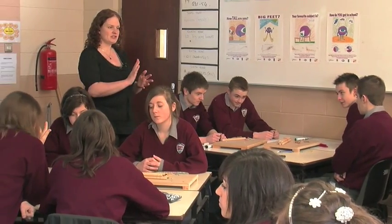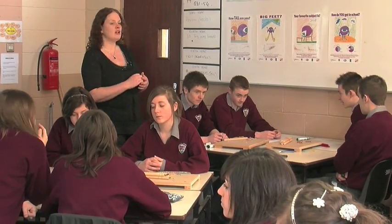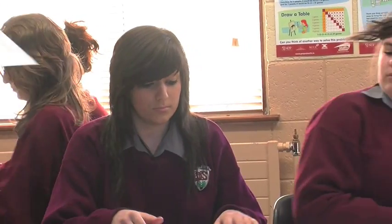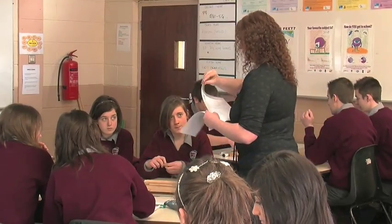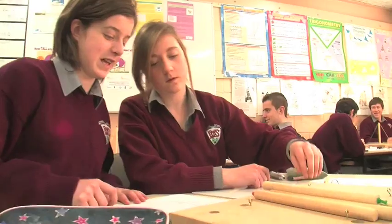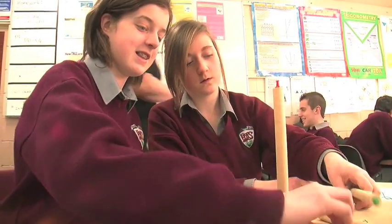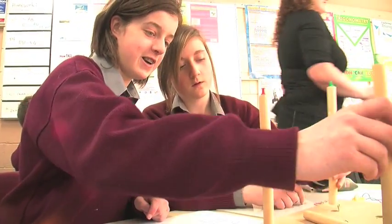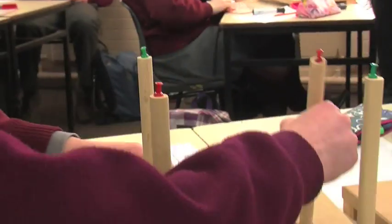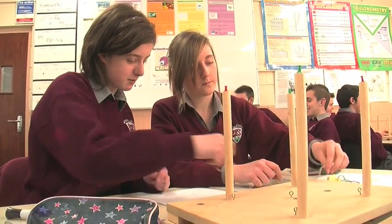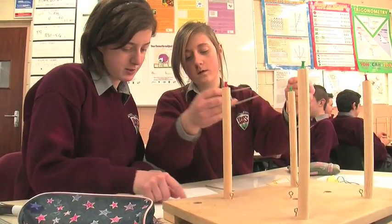The students had already studied two-dimensional trigonometry and had worked with right-angled and non-right-angled triangles. So they were given three different scenarios to work from, and they had to build the actual scenario in question using the wooden structures. It was a fantastic way to introduce them to the real world of trigonometry, and they could actually get into the three-dimensional figures and work out how they were going to solve the triangles in question.